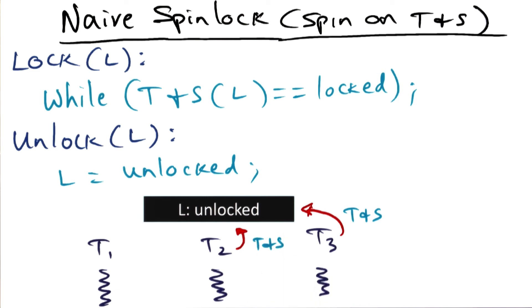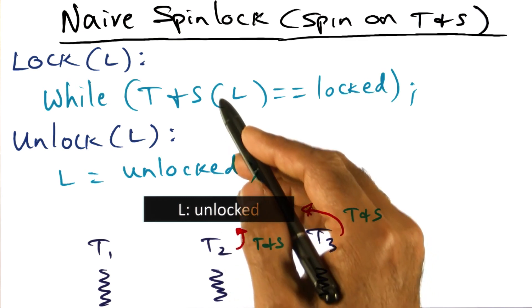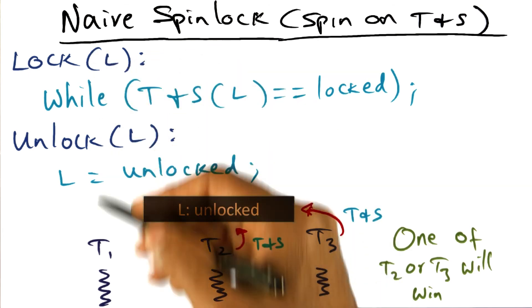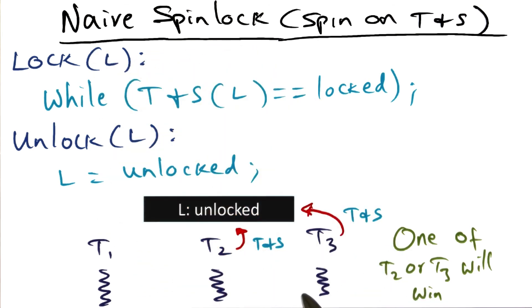And one of them will get it and will go on to executing whatever code they want to do under the protection of the lock. So only exactly one of T2 or T3 will win because that's the semantic of test and set. That's the world's simplest lock algorithm, spinning on test and set.